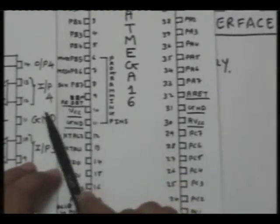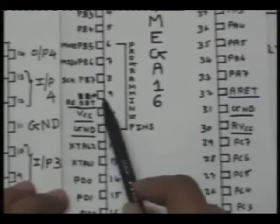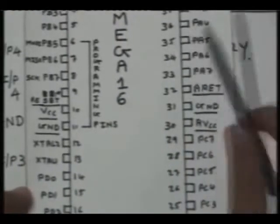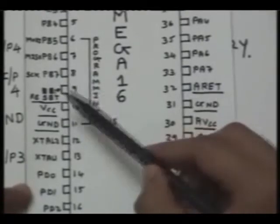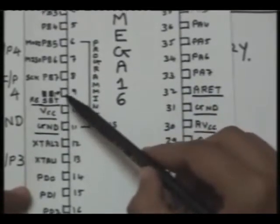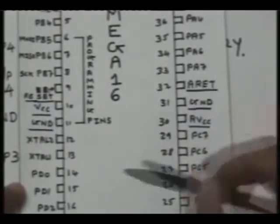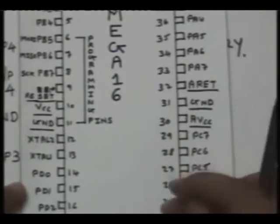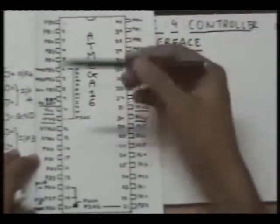The RESET pin enables when you provide a low input to it. That means by default 5 volts or high logic should be provided to RESET pin, and as soon as you provide a low logic it will reset your controller, means the pointer will set itself to the beginning of your program and your whole program will be executed starting from top to bottom.